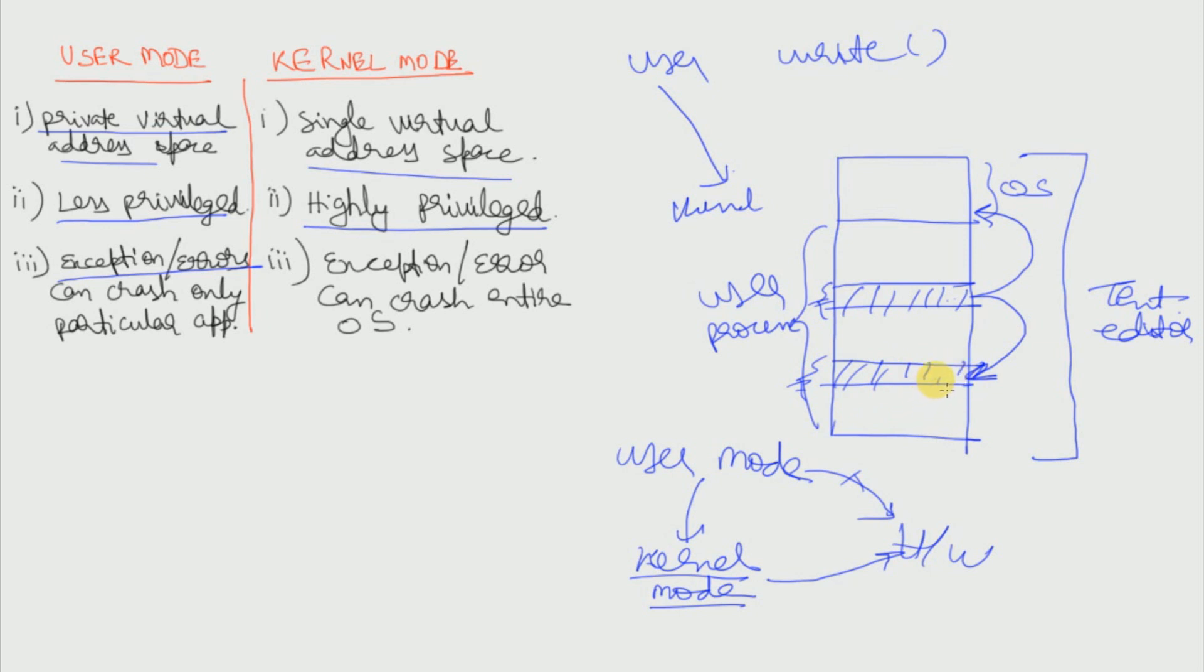While in kernel mode, since this entire area is treated as a single address space, so if anything goes wrong then this whole address space will go down and in turn the entire operating system will crash. So a kernel mode is highly privileged and is very sensitive and should be used with care.